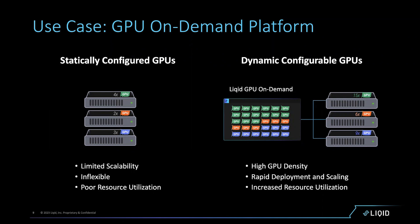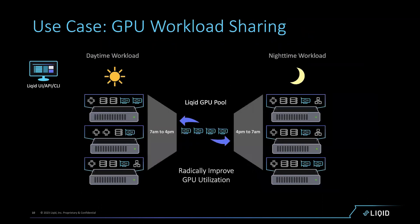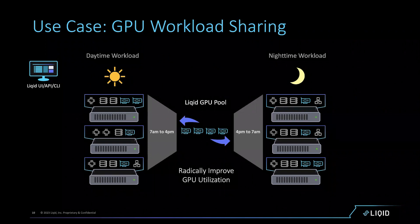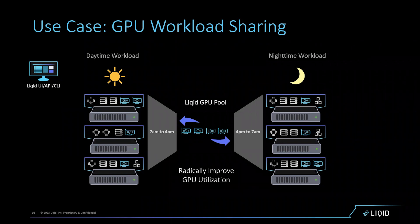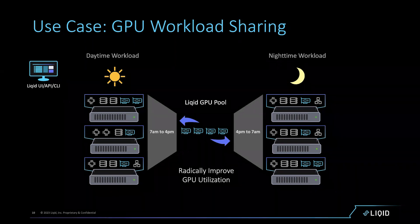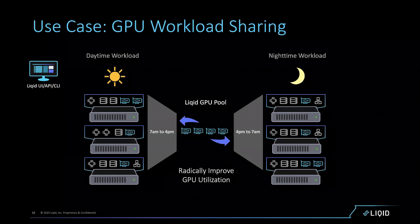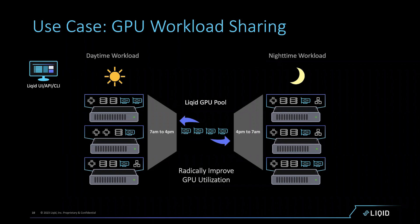Our number one use case today is serving GPUs to servers in cloud environments. A media and entertainment customer provides a great example: during the day, they give those GPUs to their AI engineers, who use them from morning till night. When those engineers go home, the customer sets a policy and automatically reprograms the fabric, moving those accelerators into the video rendering pool. They've doubled the utilization of a very expensive pool of assets — the only other way to solve that problem was to buy two sets of hardware.